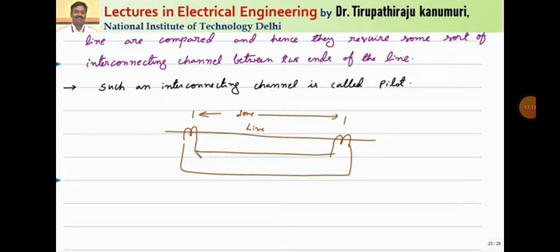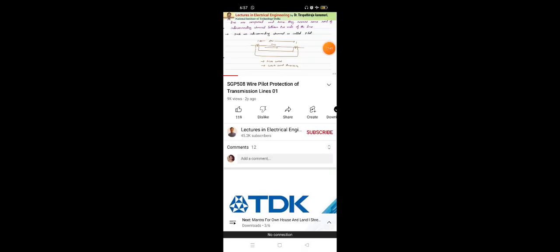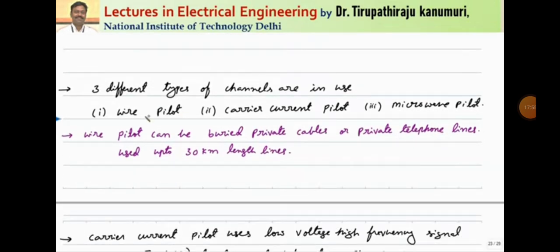One scheme is to transmit through the same transmission line using a different frequency compared to the supply frequency — this is the carrier current scheme. Another option is to transmit using microwaves. So, either microwave transmission or carrier current transmission can be used. There are three different categories: wire pilot, where physical wire is used; carrier current pilot; and microwave pilot. The wire pilot can use buried private cables or private telephone lines and is limited to up to 30 kilometers.